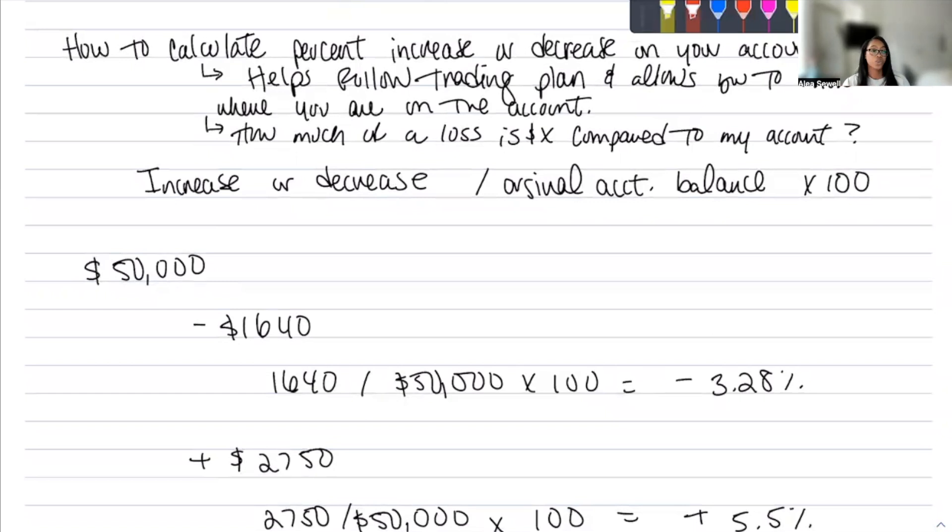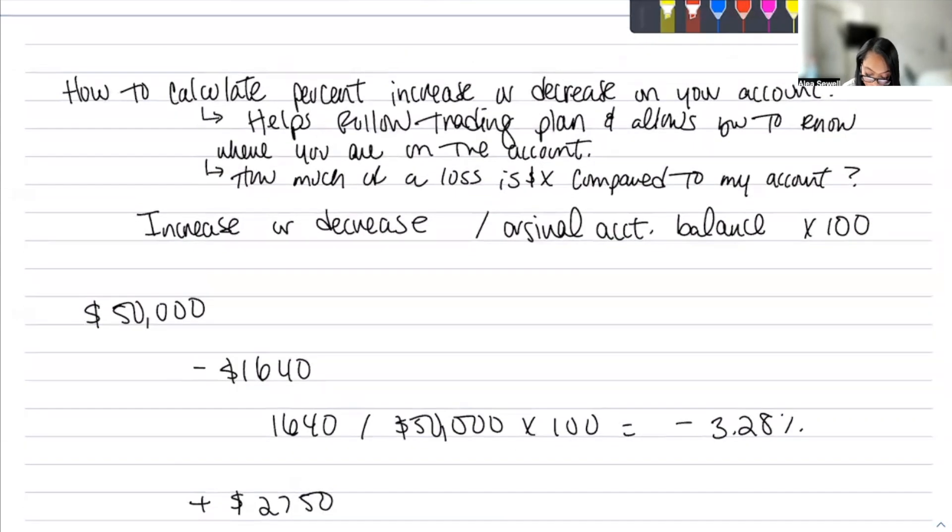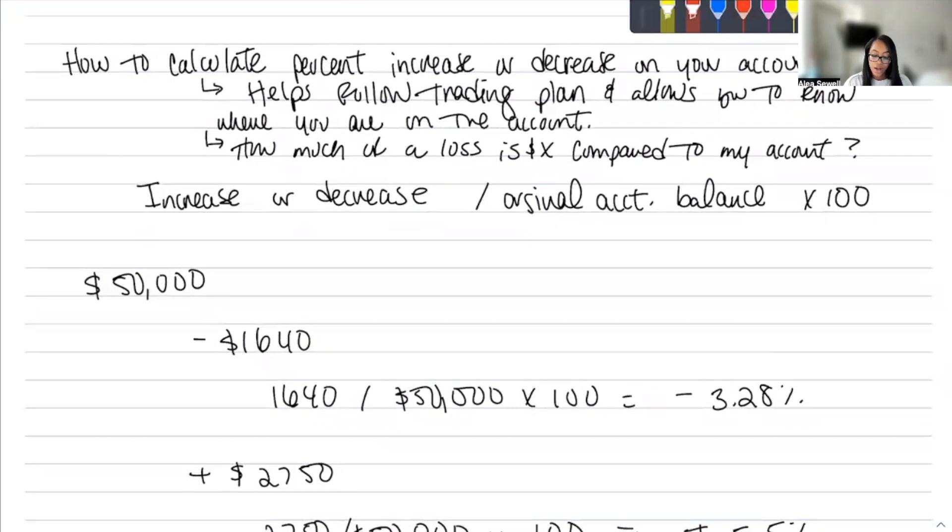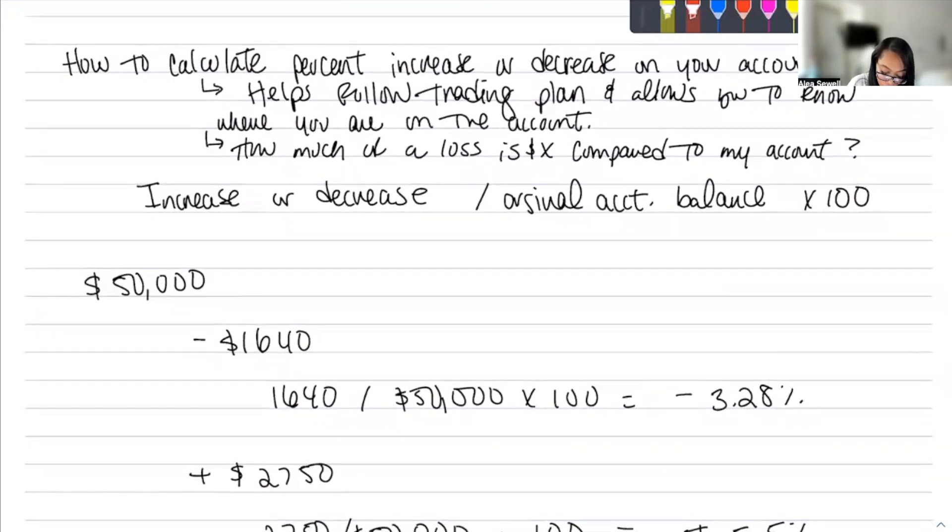So when creating a risk management plan, you literally have to tweak it every single day. Because if you want to make 4% on a daily basis or 3%, sometimes it'll be 2.9 or 3.4. If you make less or don't make anything or you make more, you have to tweak your risk management plan so you can still have that end goal. So also understanding how to calculate the increase or decrease allows you to ask yourself this question: How much of a loss is whatever number compared to my account?